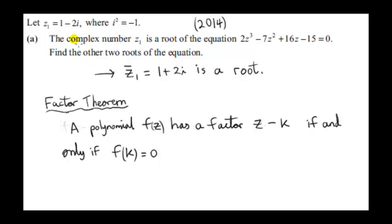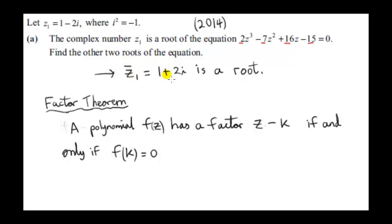In this question, we are given that the complex number 1 minus 2i is a root of this cubic equation. Notice that the coefficients are all real numbers. When that happens, the conjugate of 1 minus 2i is another root of this cubic equation. The conjugate of 1 minus 2i, written Z1 bar, is 1 plus 2i.